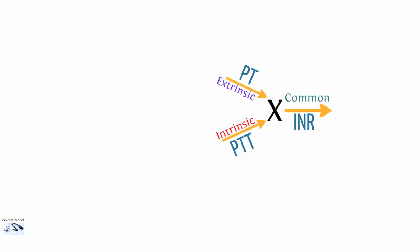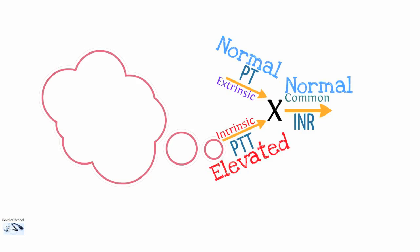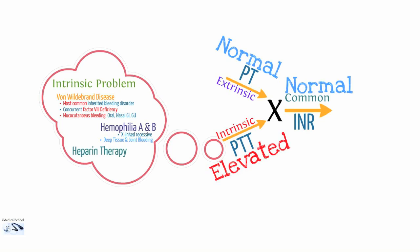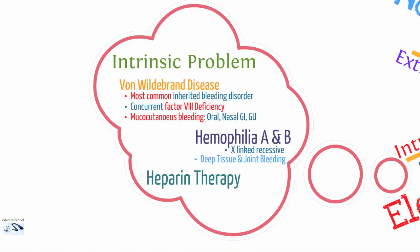In our second scenario, our PT is normal, our PTT is elevated, and our INR is normal. Right away you can see this is likely an intrinsic pathway problem. The factors involved include XII, XI, IX, and VIII. Diseases that can affect these factors include von Willebrand disease, hemophilia A and B, and heparin therapy. Von Willebrand disease is the most common inherited bleeding disorder and can cause a concurrent factor VIII deficiency, because factor VIII needs to bind von Willebrand factor to remain stable. Without adequate vWF, factor VIII becomes unstable, degrades in circulation, and becomes deficient.